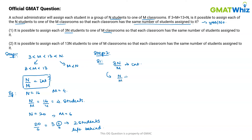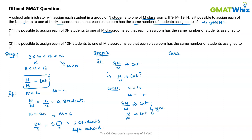Can we conclude from this whether n over m is an integer? Case 1: suppose n equals 14 — which is greater than 13 — and m equals 7, which lies within the range. In this case, 3n over m is an integer and n over m is also an integer, so I can answer the question with a definite yes.